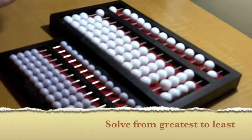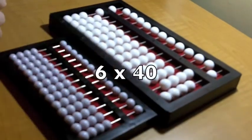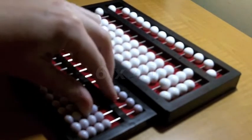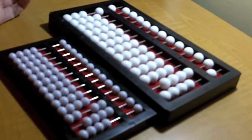And now I'm actually going to solve from greatest to least. 6 times 40 is 240, so I'm going to set 240 on the bottom.